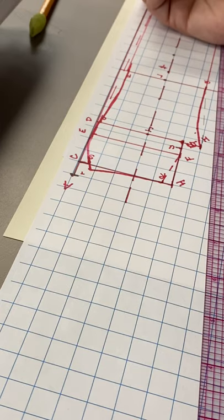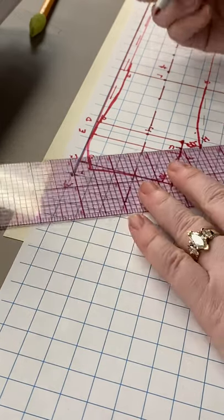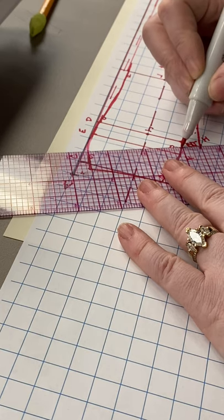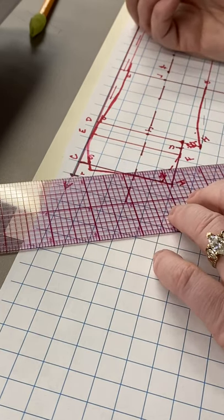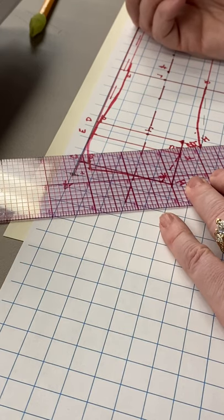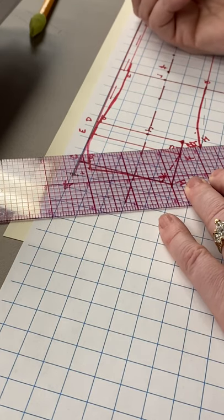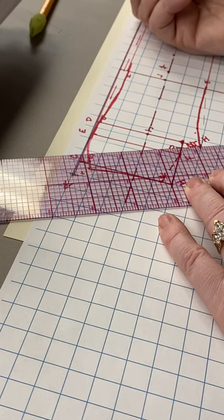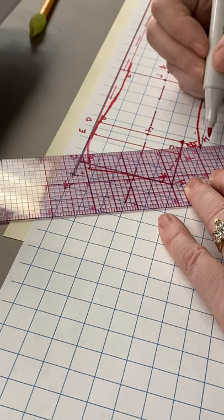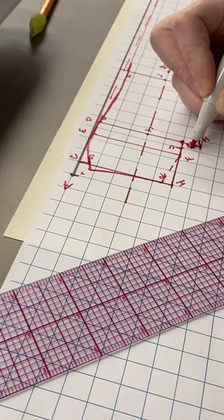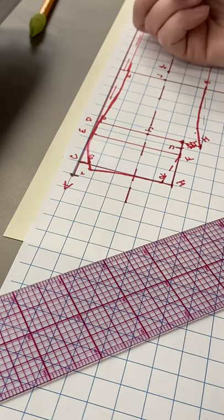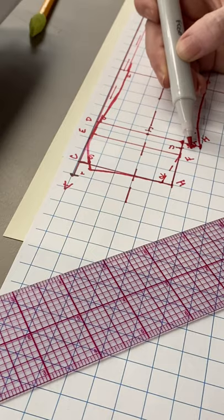From U, we're going to draw a straight line to I. I'm drawing dotted lines because they're not real lines yet. From U to I, you're going to find the midpoint. That is going to become V. So right here in the middle.